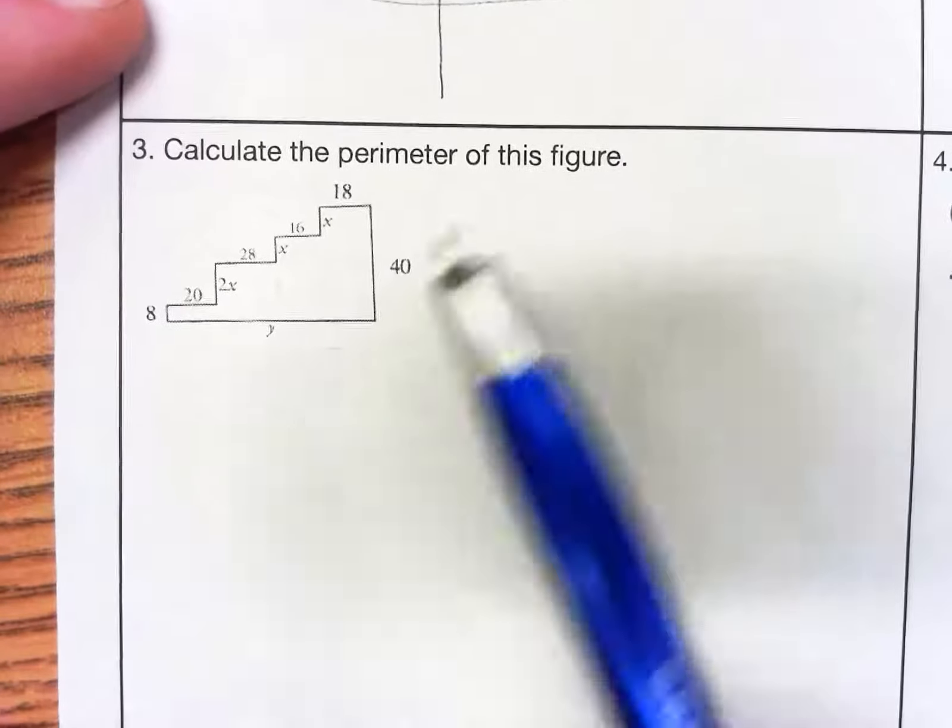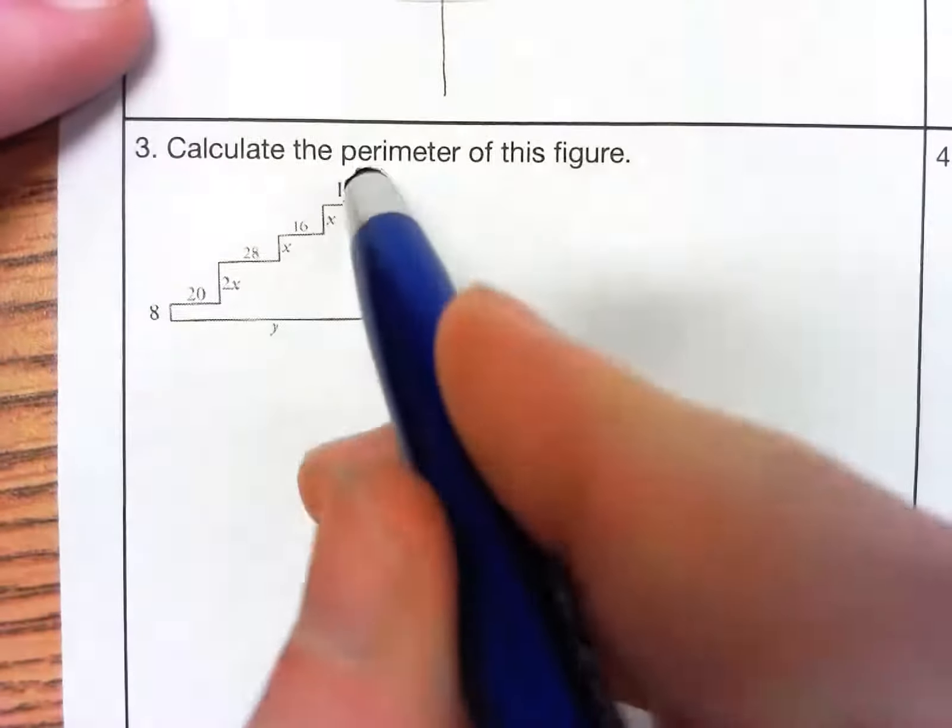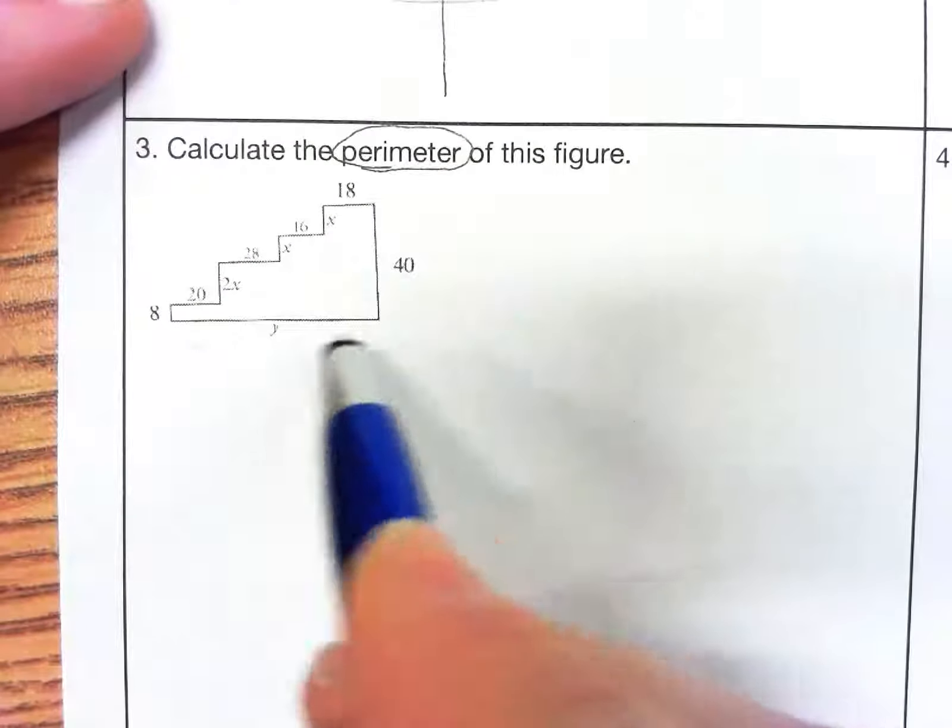This is question number 3 on homework number 4. This is a review question. We know that perimeter means adding up all the sides.